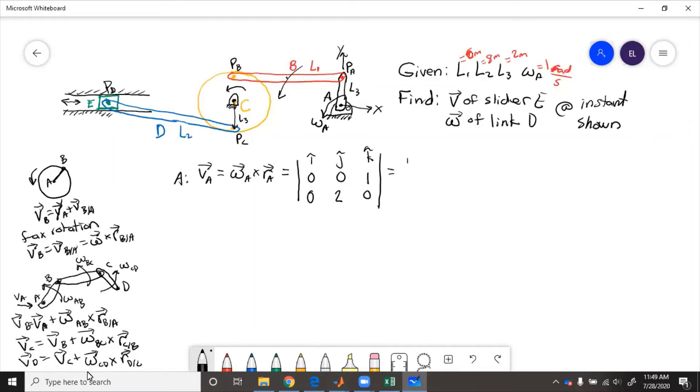So if we do this cross product, we get i hat times zero, which is going to be, cross product is this multiplication minus this multiplication. That's how you get cross product. So in i hat direction, we're going to have zero minus two times one, which is two, equals negative two i hat meters per second. So we look up at this, we see, does that make sense? Well, it's the negative X. And the magnitude is omega times R. Good. So that equals VA.